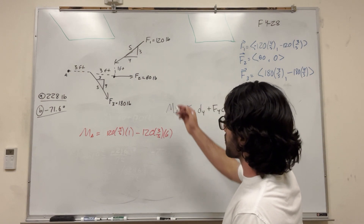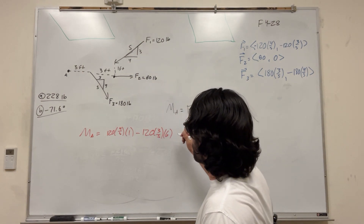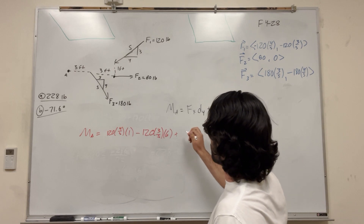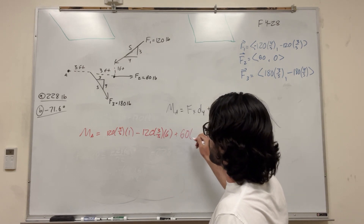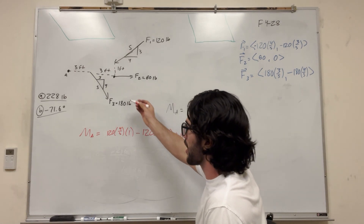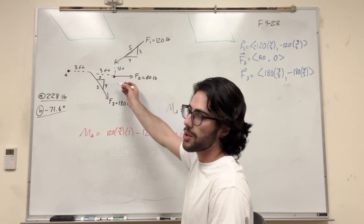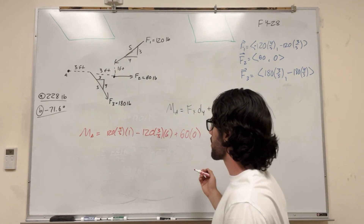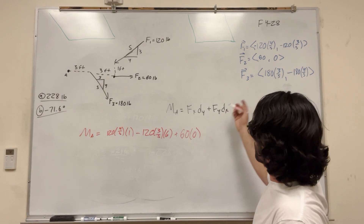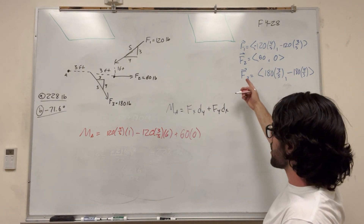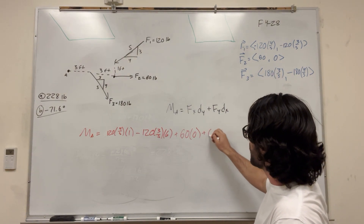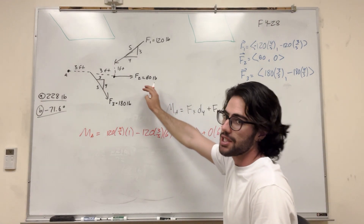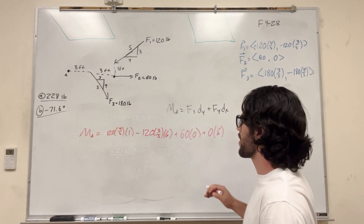Force 2: force in x is 60, but its distance in the y direction is 0, so that gets dropped. And there's no force in the y direction either, so that's 0 times 6. This force doesn't contribute anything to the moment, so we don't have to worry about it.